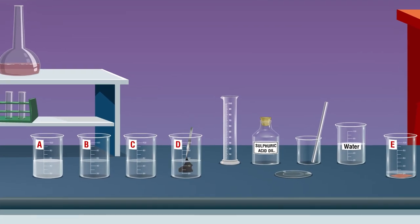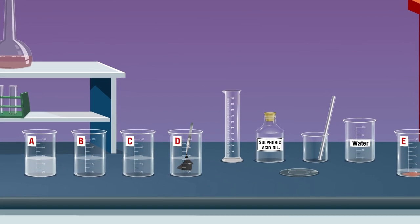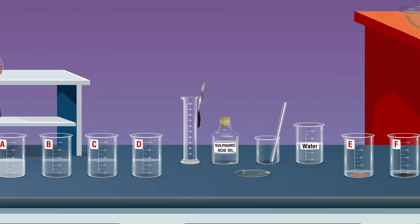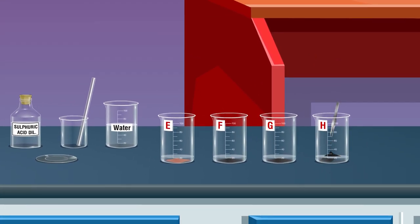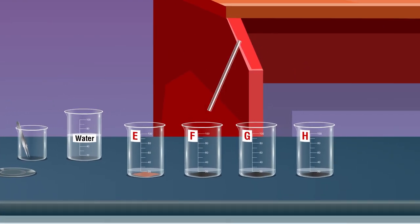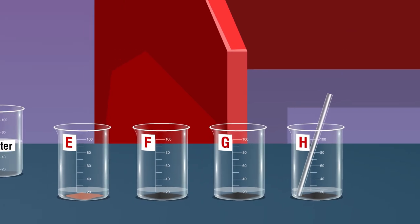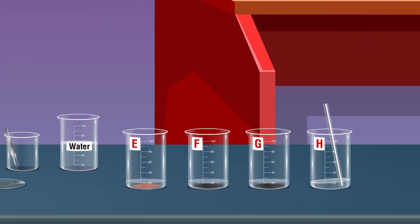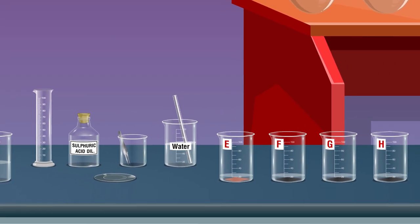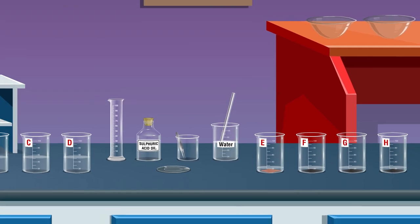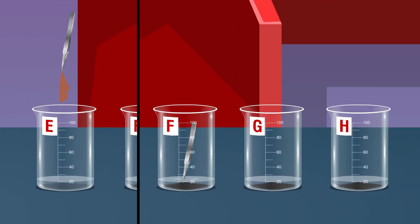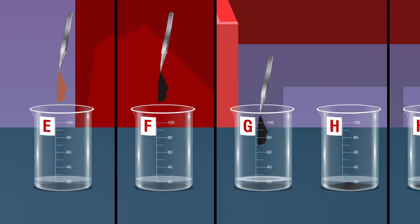Dip a small piece of black cloth in beaker D. Take out the cloth from beaker D using tweezers, pick the cloth from the beaker and dip it in dilute sulfuric acid in beaker H, and stir it gently with the help of a glass rod.